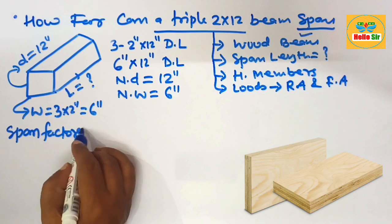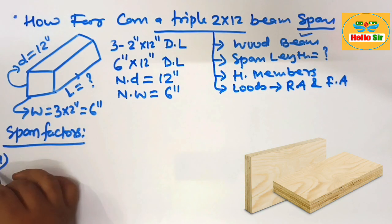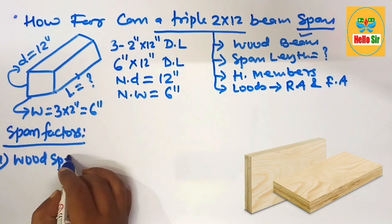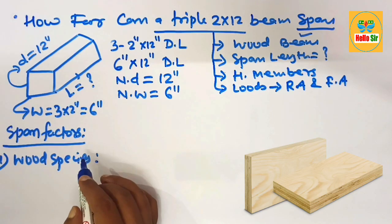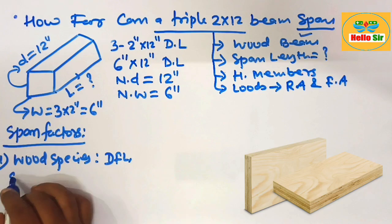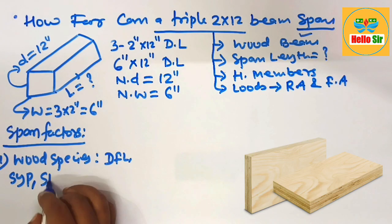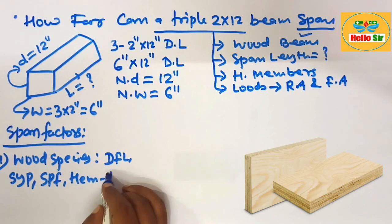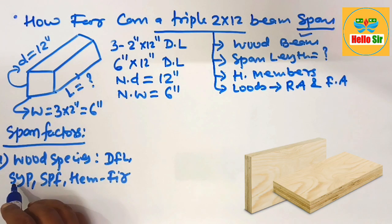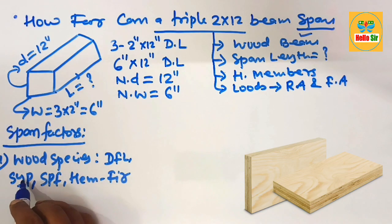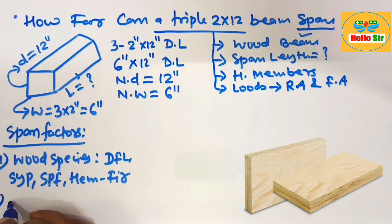The first factor that determines the span length is wood species and their grade. There are different kinds of wood, like Douglas Fir-Larch (DFL), Southern Yellow Pine (SYP), Spruce-Pine-Fir (SPF), and Hem-Fir. Southern Yellow Pine is the strongest wood species and can span more distance compared to other species.